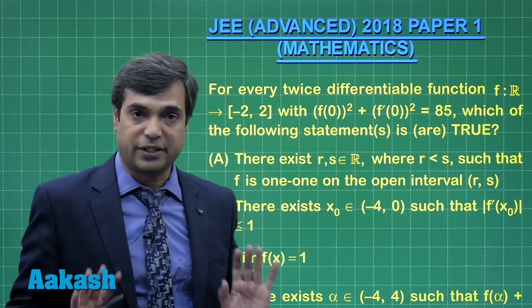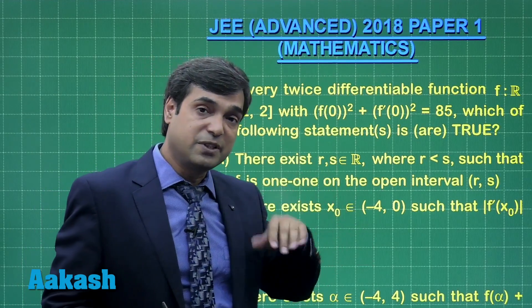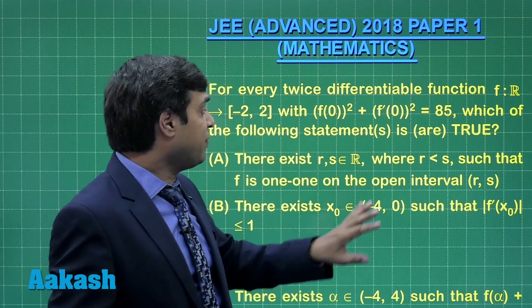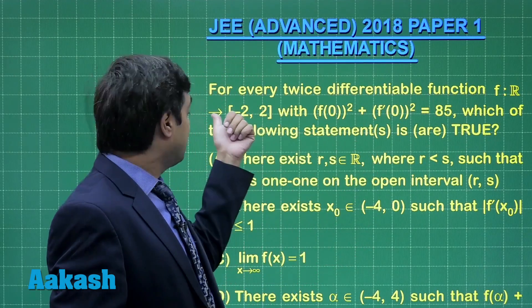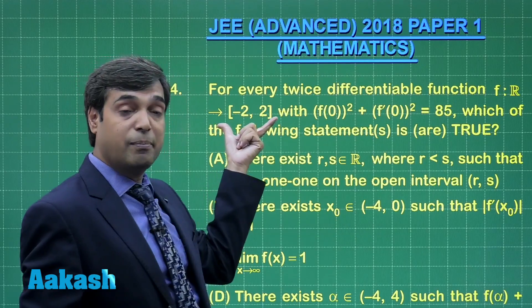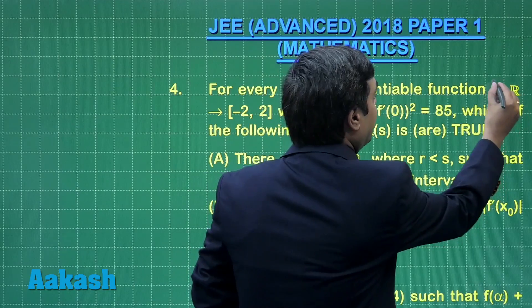Let us consider f is a constant function. If f is a constant function then its derivative becomes 0. Its derivative is 0 meaning f(0) comes as root 85, but it is given the values of f lying in the interval minus 2 to 2, meaning f is not a constant function.